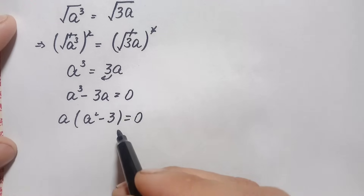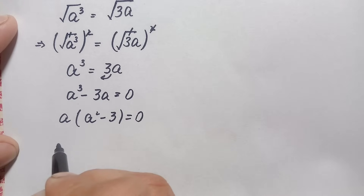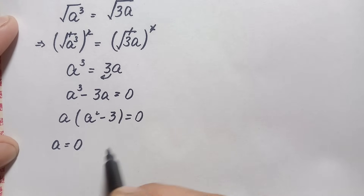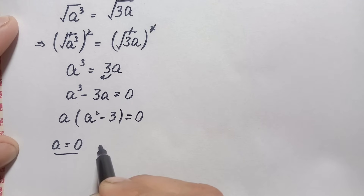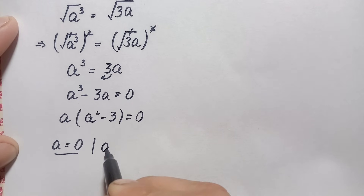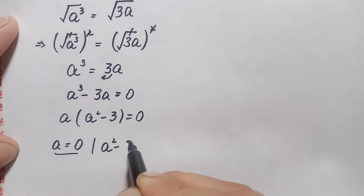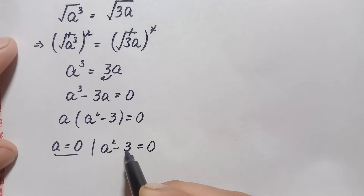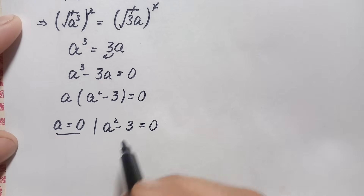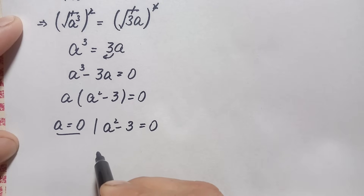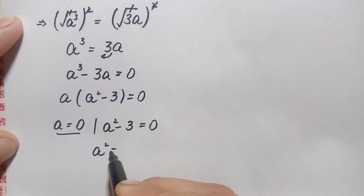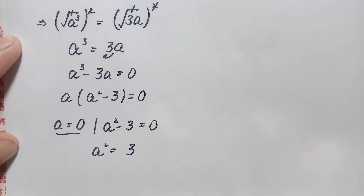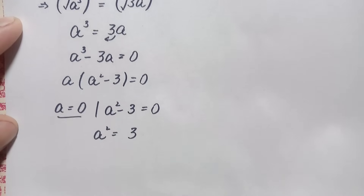Since the product of these two expressions is zero, either a equals zero or the quadratic equation equals zero. This gives us two equations. The first is the obvious value a is equal to zero. The second is a squared minus 3 is equal to zero, which gives a squared is equal to 3.